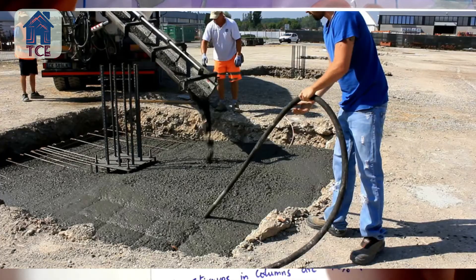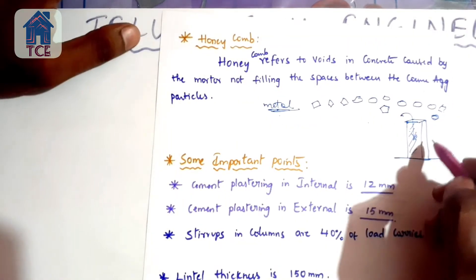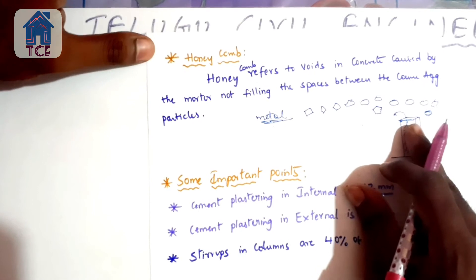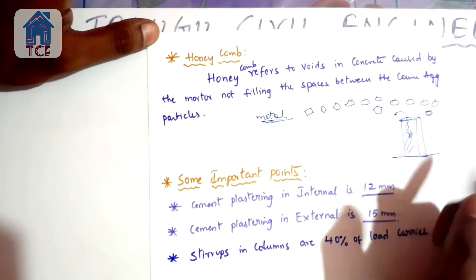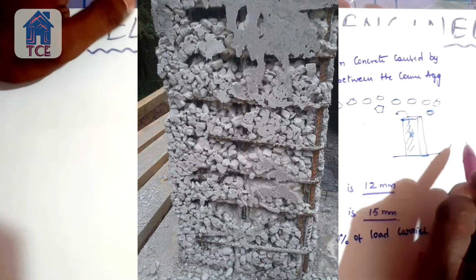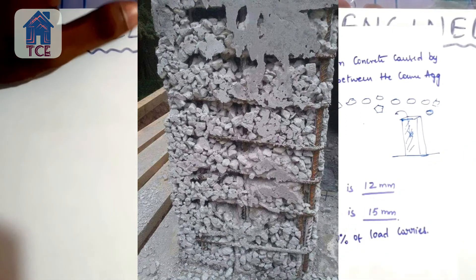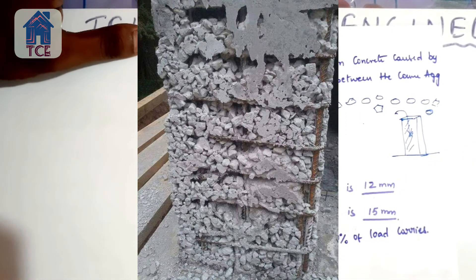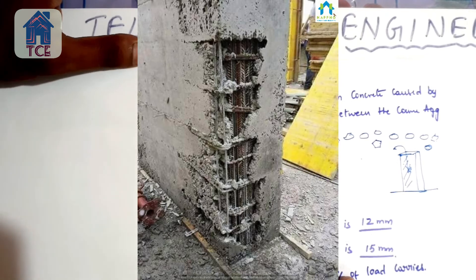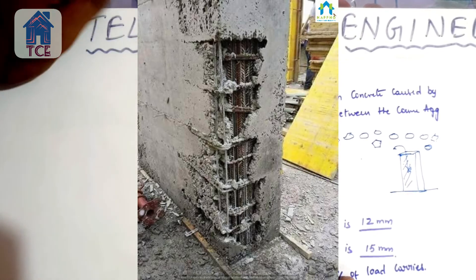To prevent honeycombs, the concrete must be properly vibrated. A concrete vibrator is used on site to compact the concrete and eliminate voids. Proper vibration ensures the mortar fills all spaces between the aggregate.